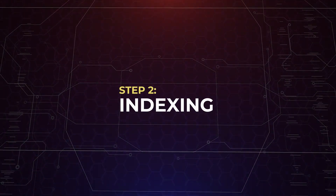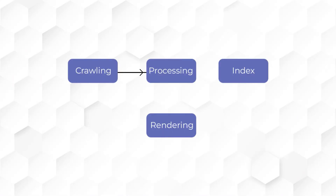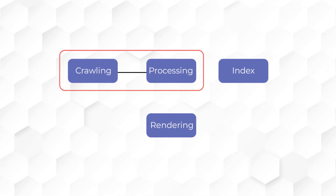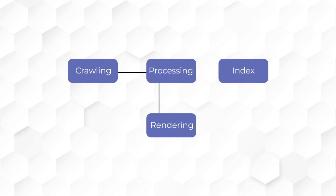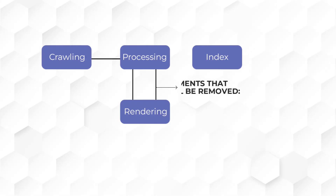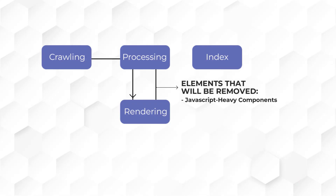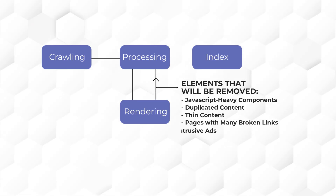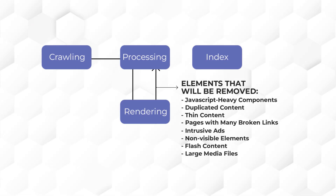Once the robots have successfully crawled the pages of your site, they will bring it back to Google for processing. Before any content is indexed in the search engine's database, it will be processed as part of the indexing stage. This is where search engines analyze the content and remove unnecessary elements like JavaScript-heavy components, duplicated content, thin content, pages with many broken internal or external links, excessive advertising or intrusive ads, non-visible elements, flash content, large media files like images or videos without proper optimization, tracking codes and parameters, and anything that does not contribute to search relevance.